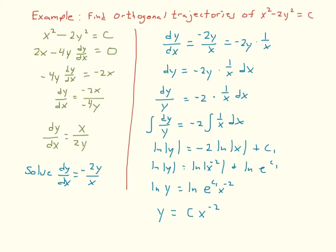Let's see how this works. We want to find the orthogonal trajectories to x² − 2y² = C. First, find dy/dx by differentiating both sides with respect to x: 2x − 4y·(dy/dx) = 0. Subtracting 2x from both sides: −4y·(dy/dx) = −2x, then dividing by −4y gives dy/dx = x/(2y).